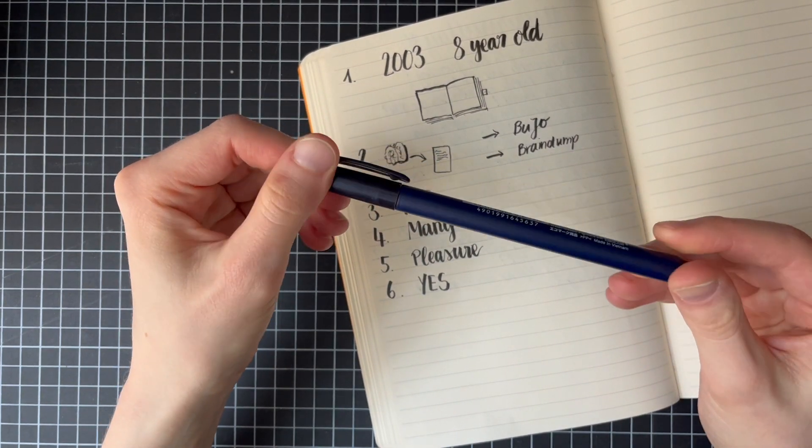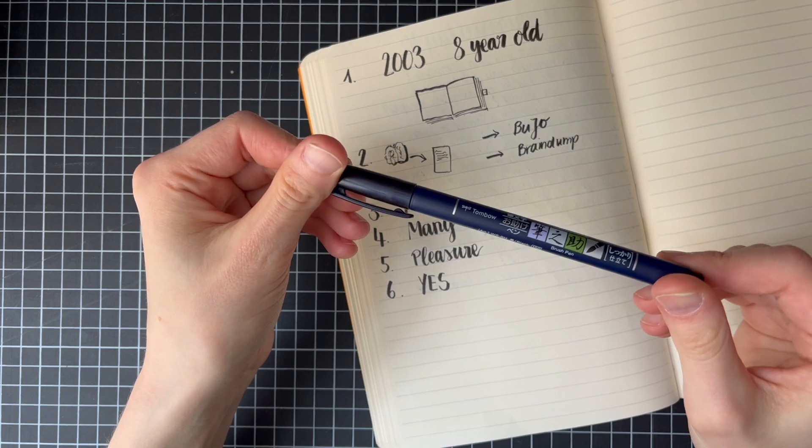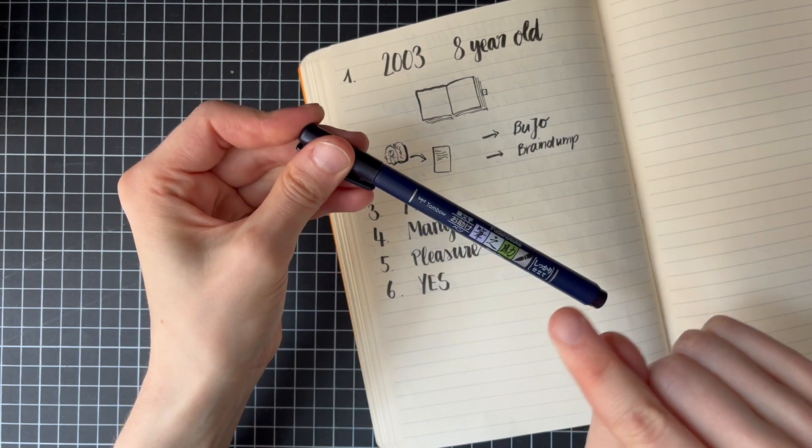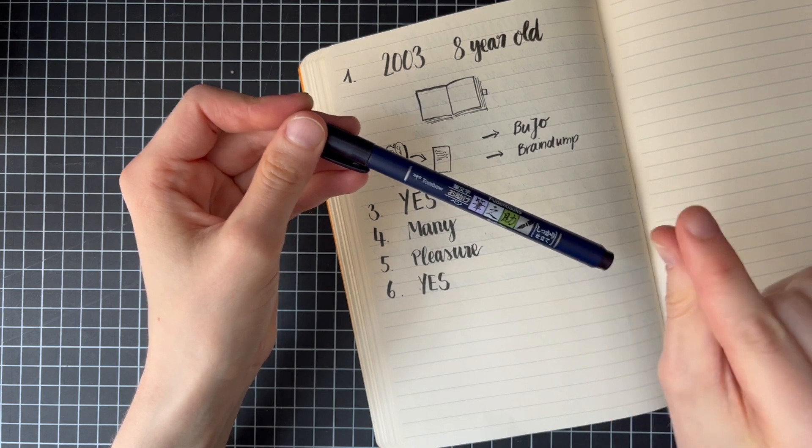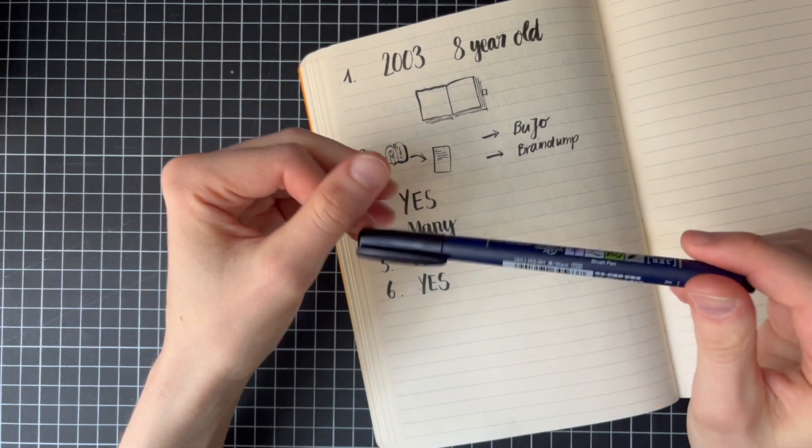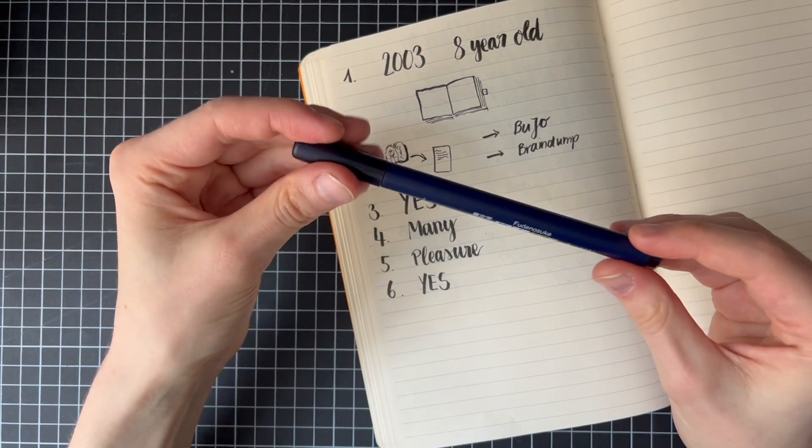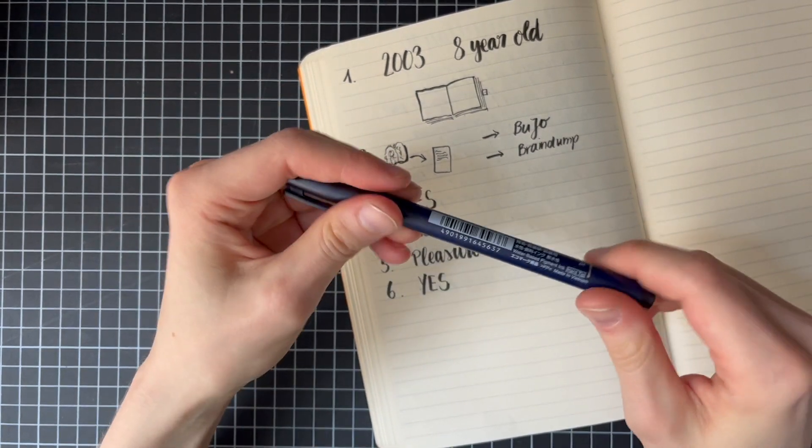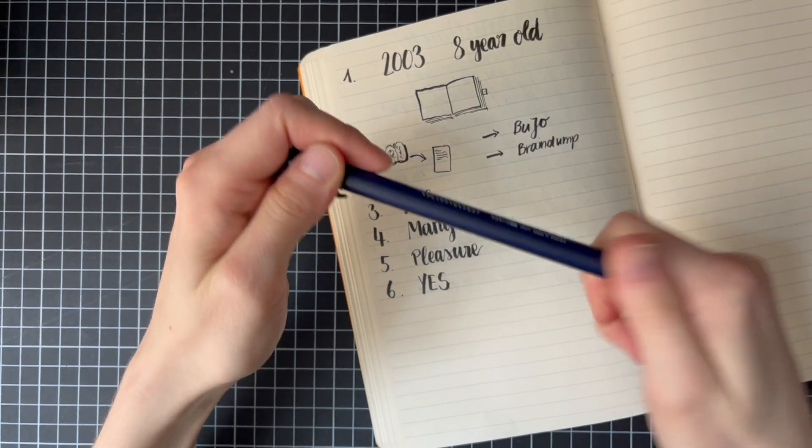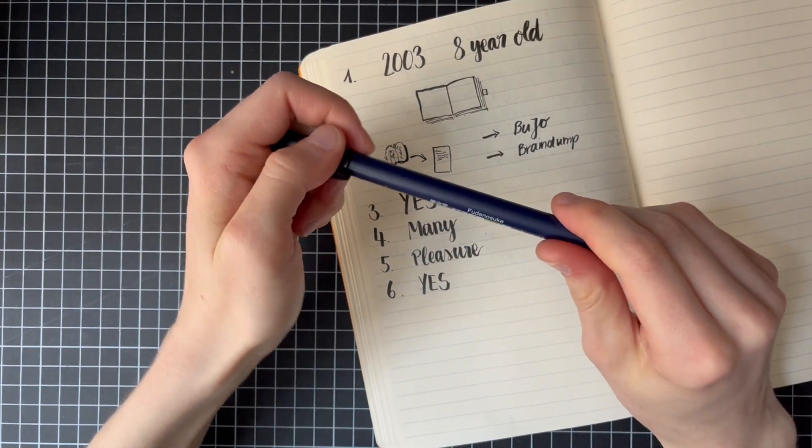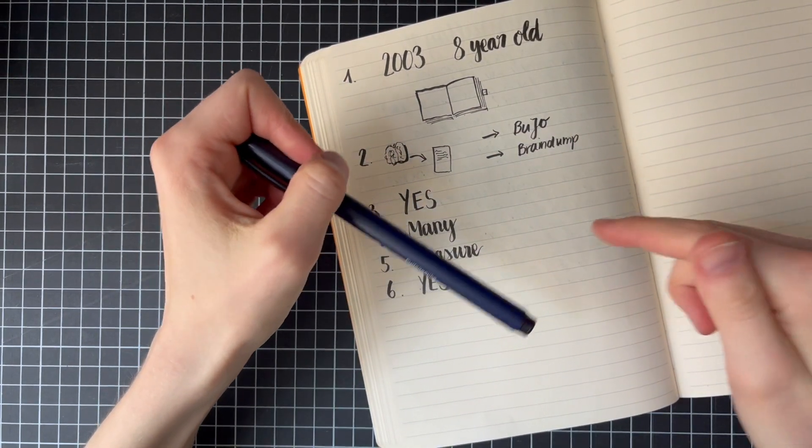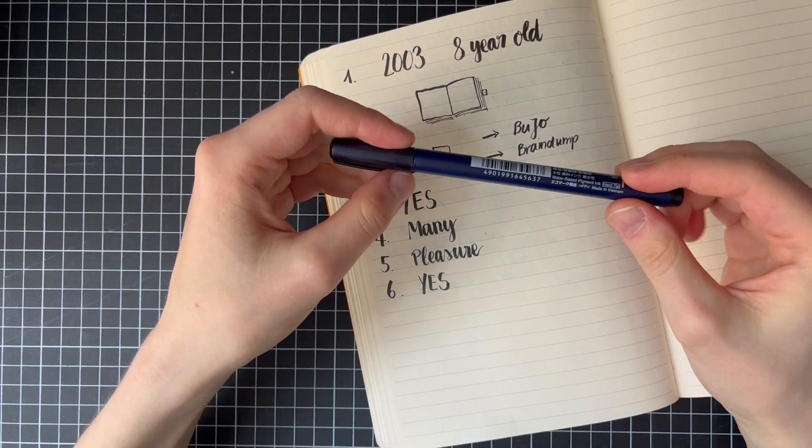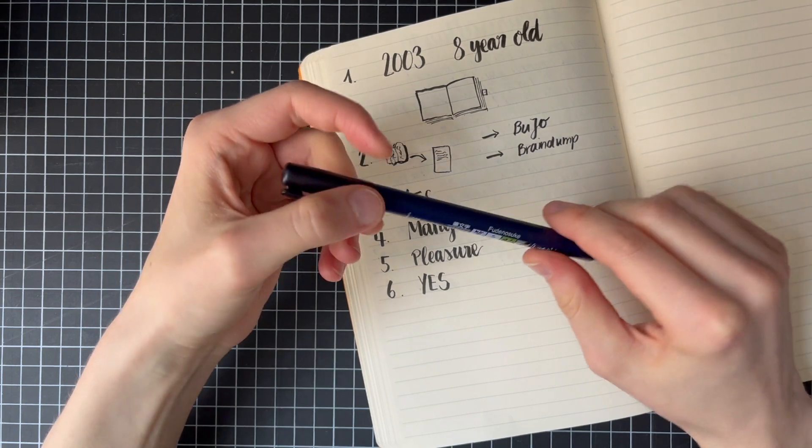With this Tombow Fudenosuke brush pen in the hard tip, I'm right now doing my date header on top in my brain dump journal for every day that I'm journaling. Today is the 10th of May. So I would write just 10th of May on top, maybe the weekday, and then afterwards, I'm going in with my fountain pens.